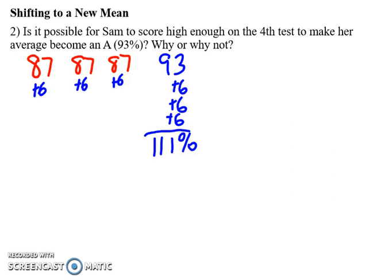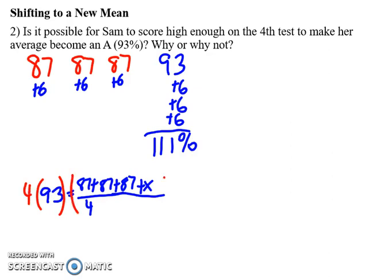I can use the mean formula as well. What I know is that 93% is the mean I want, and I know it's going to be four tests. Since the first three had an average of 87, I can just use 87 as that number, and I need that fourth test which I don't know. First, I'm going to multiply both sides by four so the denominator disappears. This gets me to 372 equals 261 plus x, which means that x is 111. So either method, I'll end up at the same place.